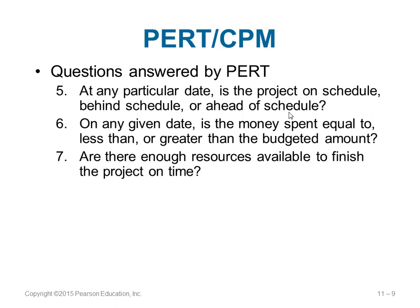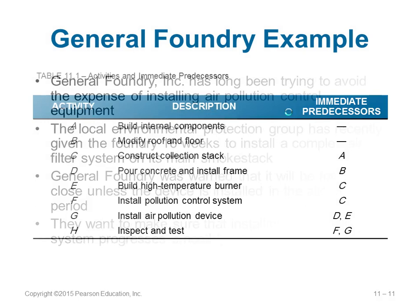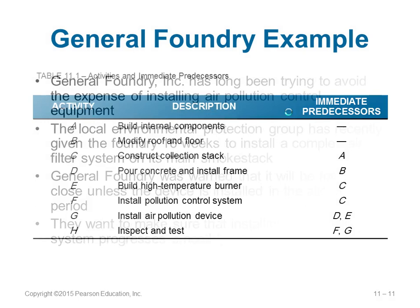You can also find out whether you have enough resources to finish the project on time. As an example, consider a company called General Foundry. They have been trying to avoid installing an air pollution control system, but a local environmental protection group has given them 16 weeks to finish it, otherwise their industry will be closed. To set up this air pollution unit, they divided the bigger task into smaller sections: activity A is 'build internal components,' activity B is 'modify roof and floor,' activity C is 'construct,' and so on — eight activities named A through H.